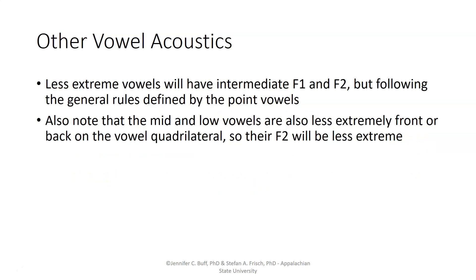For the vowels that are in between these point vowels, they have values for the first and second formants that are intermediate between these point vowel acoustic values. But they generally follow the rules for point vowels. So we have more front vowels with a high F2, more back vowels with a low F2, vowels near the high end with a lower F1, vowels near the lower end with a high F1.